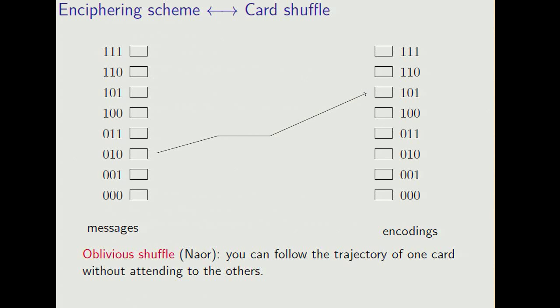Now do a bunch of shuffles. If the card in position 1, 0, 0 is sent to position 1, 0, 1, then if the message is 0, 1, 0, the encoding is 1, 0, 1.